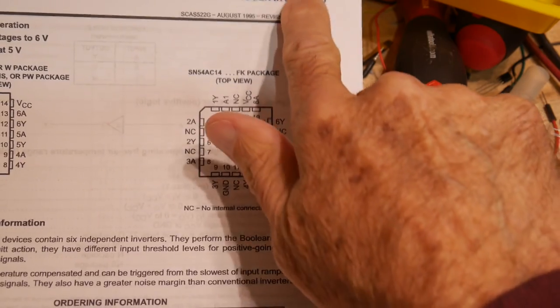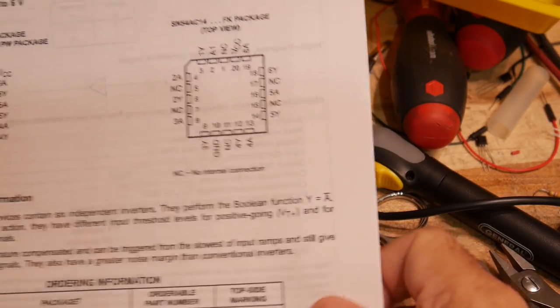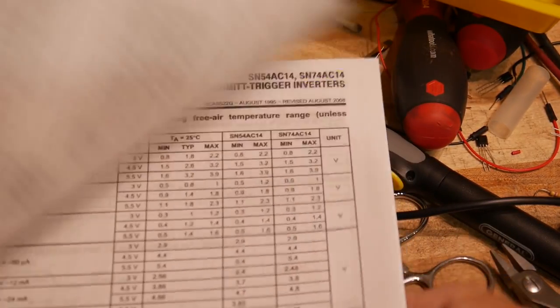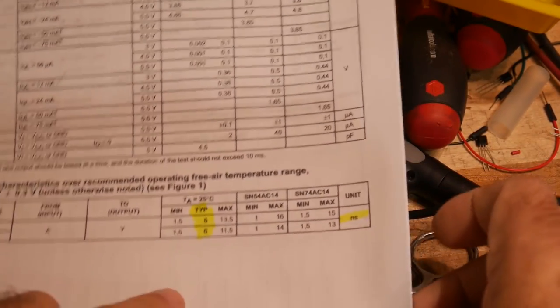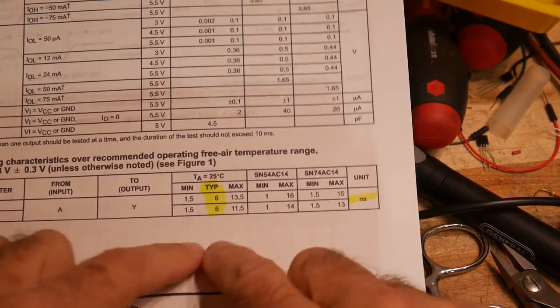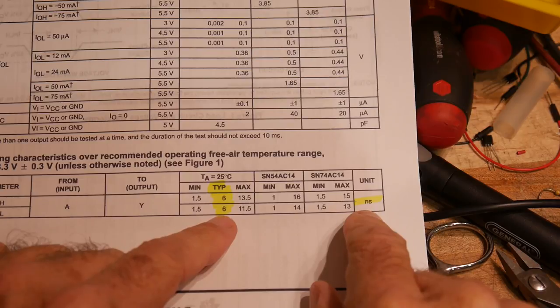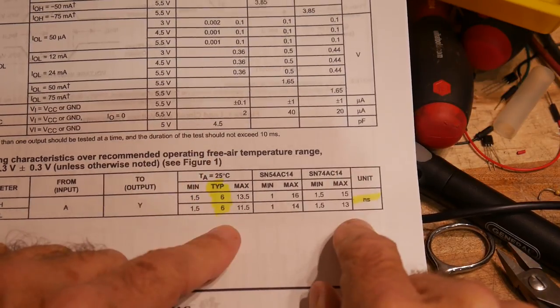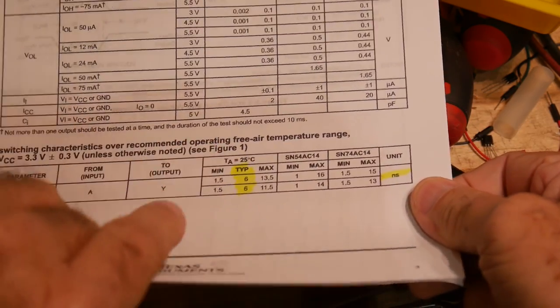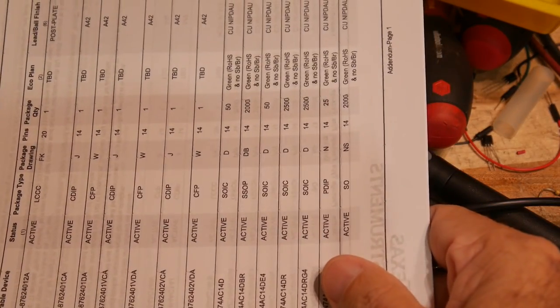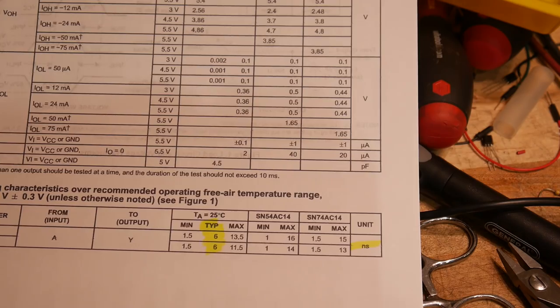Let's look at the other datasheet. So this is a 74AC part, which should be 10 times faster. So let's look for switching times. And... Here I found them. And guess what? 6 nanoseconds. It's exactly the same. Even though the propagation delays are much faster. The switching characteristics are the same. And that's sort of what we're seeing in the, uh... Seeing on the oscilloscope.